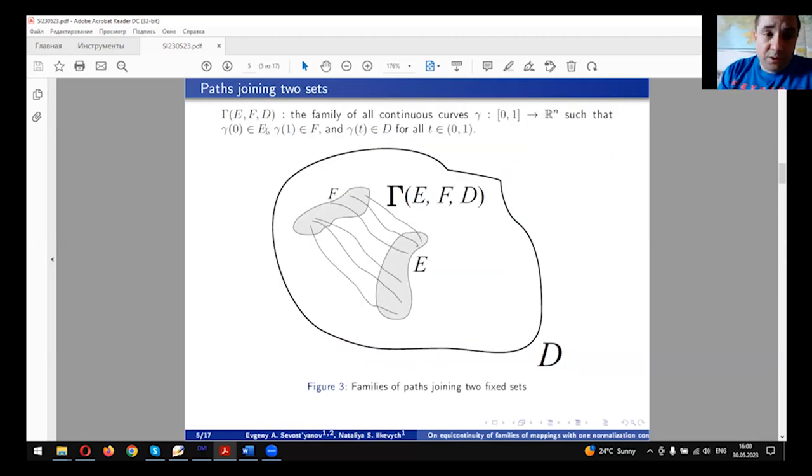One more definition concerns the families joining two sets. Let E and F be two sets in domain D. Then, by the triple Γ(E,F,D), we denote the family of all continuous paths joining these sets E and F in domain D, as in the picture here.